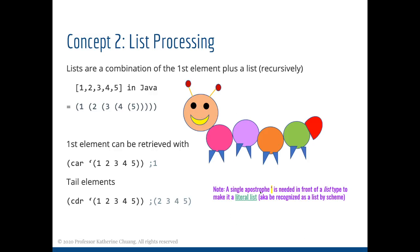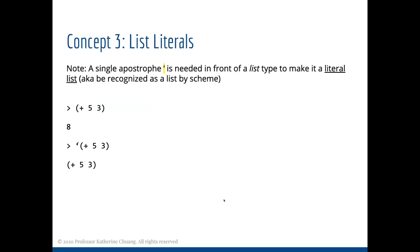You have to use an apostrophe to make it literal. If you don't, then Scheme is going to think it's something else. That leads to the third concept: list literals. A single apostrophe is needed to make it literal so it's recognized as a list as opposed to the evaluate function. For instance, if you in the command REPL area add 5 and 3 together, you get 8, but if you put an apostrophe, then it's a literal and you get that expression returned. Those are the three concepts: evaluate, list processing, and list literals.